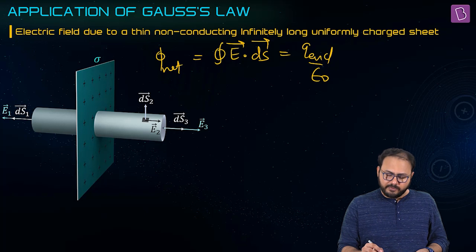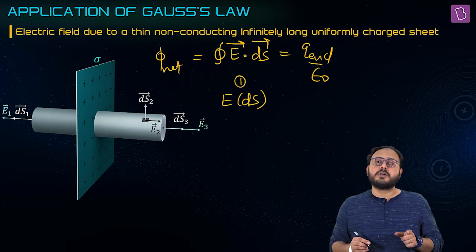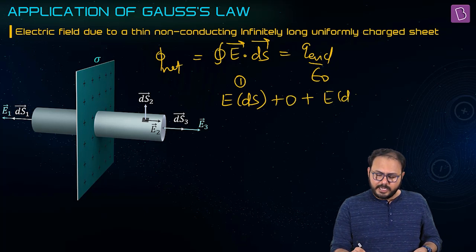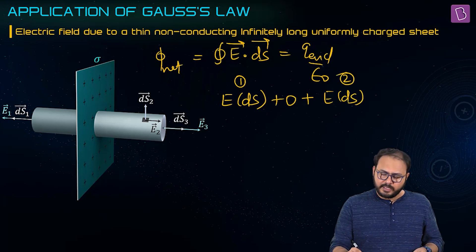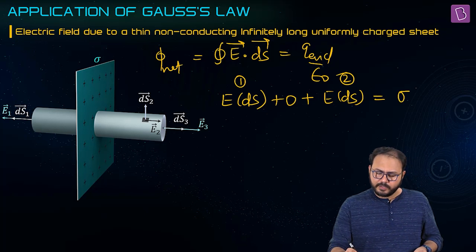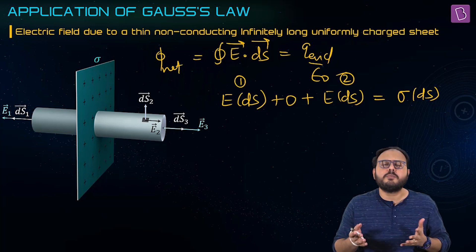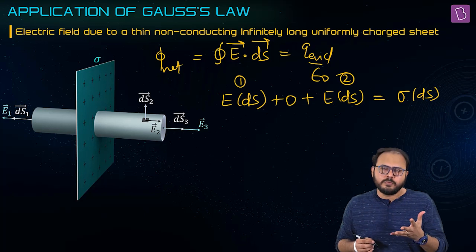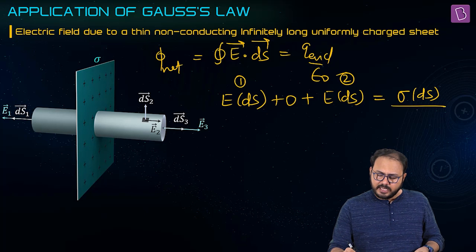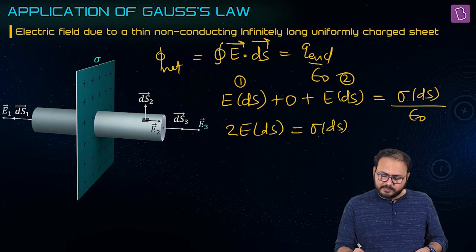Flux through the first one: E ds. Why put one on top? Because all ds are equal — it's just signature. Zero for the curved surface. E ds for the third surface. And that's equal to sigma ds. You took rho in the previous example — yes, because that was volume. Right now it's surface area: sigma — surface charge density. And it's only ds, so sigma ds upon ε₀. So I got two E ds equal to sigma ds by ε₀.